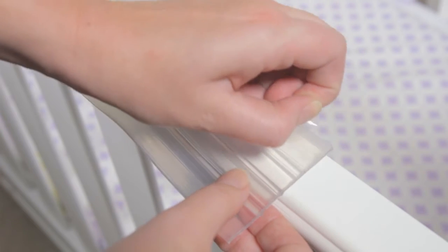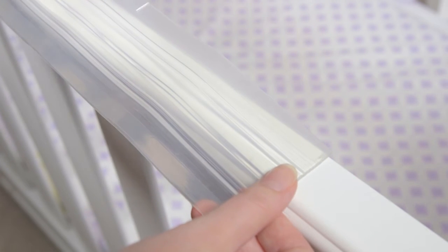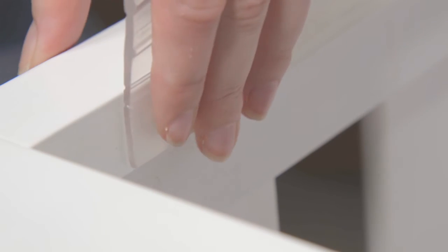Without stretching the Gummy Crib Rail Cover, slowly remove the tape backing like you would a sticker. Press the adhesive firmly against one side of the crib rail.